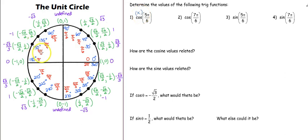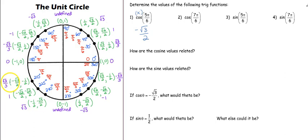At 5π/6 I'm looking at the x-coordinate, so the answer is negative √3/2. Next, I want the cosine of 7π/6. I look at my unit circle, find 7π/6 — we're still looking at cosine, so we're still looking at the x-coordinate — and we get negative √3/2.